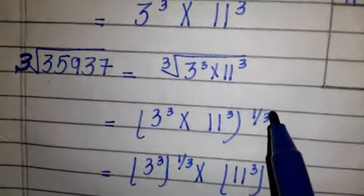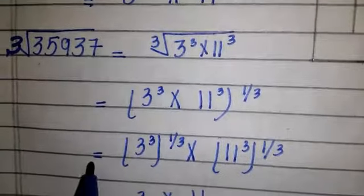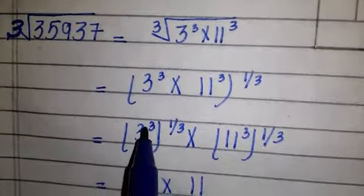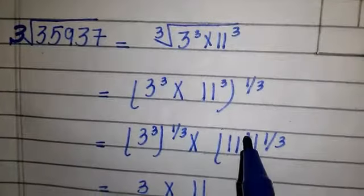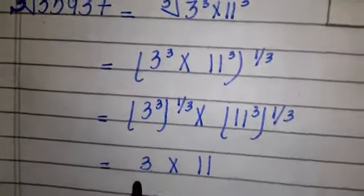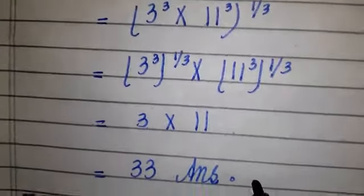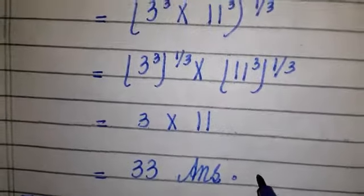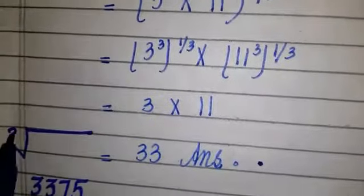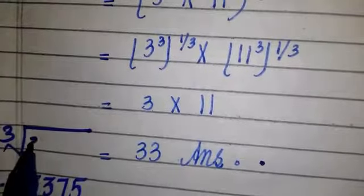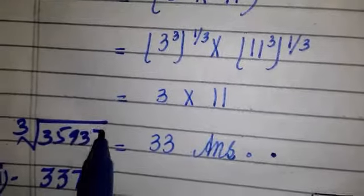This equals 3 to the power 3 into 11 to the power 3, whole to the power 1 over 3, which equals 3 to the power 3 times 1 over 3, into 11 to the power 3 times 1 over 3, which equals 3 into 11, which equals 33. So the cube root of 35937 is 33.